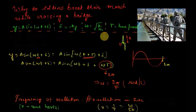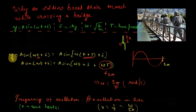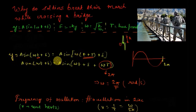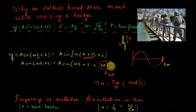To summarize what we have discussed: the particle repeats its motion after time period T. At time t the position is y = A sin(ωt + δ), and at time t + T the position must be the same. Since the sine function repeats after an interval of 2π, we need ωT = 2π, which gives ω = 2π/T. This quantifies omega.